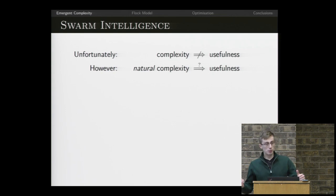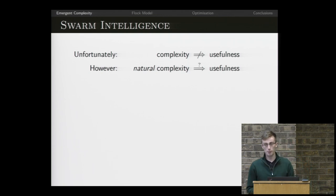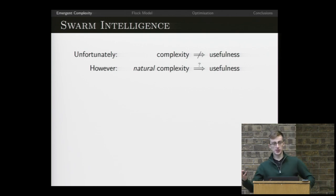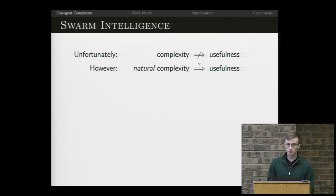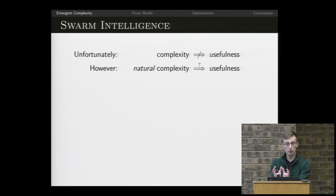We've shown that we can achieve complexity, but it's fair to ask: why do we care? Complex systems are not necessarily useful. But there's something really interesting about the way complexity arises in natural systems. Complexity in nature is expensive from an evolutionary level. If you have a complex system and a simple system both solving the same problem with the same effectiveness, the simple one will win because it uses less energy. Natural selection dictates that the simpler one wins. So if we see complicated systems in nature, we can reason a priori that there must be some good reason that complexity exists.